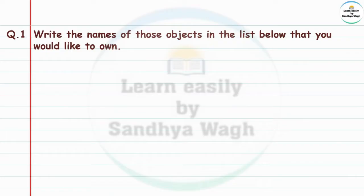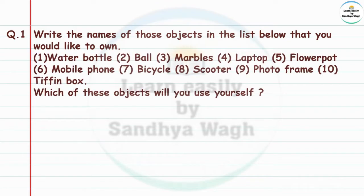Question 1: Write the names of those objects in the list below that you would like to own. The list includes: water bottle, ball, marbles, laptop, flower pot, mobile phone, bicycle, scooter, photo frame, and tiffin box. Which of these objects will you use yourself?